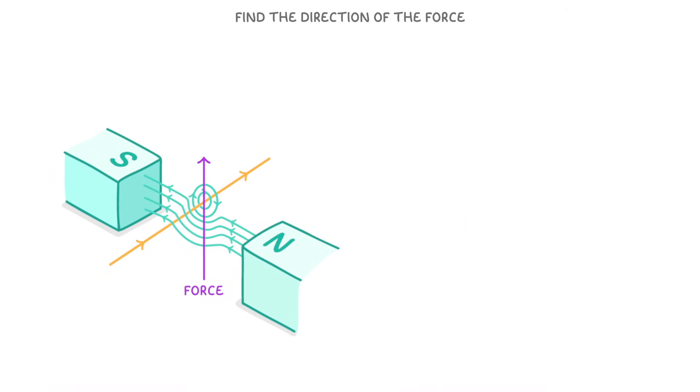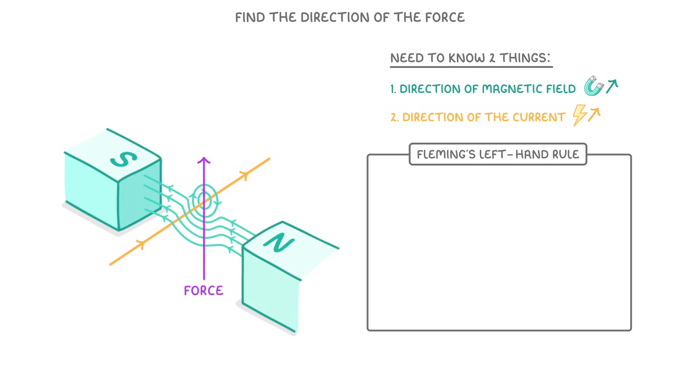To find the direction of the force, we need to know two things: the direction of the magnetic field and the direction of the current in the wire. To understand how they affect the force, we use something called Fleming's left hand rule.